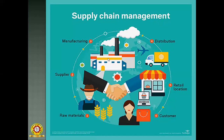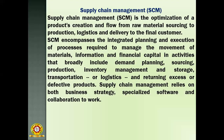The main important thing in supply chain management is how to reach the product to the customer, and you have to manage all these things in an efficient manner to give timely delivery. Supply chain management is the optimization of your product's creation and flow from raw material sourcing to production, logistics, and delivery to the final customer.